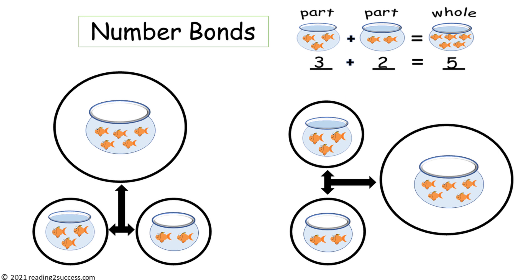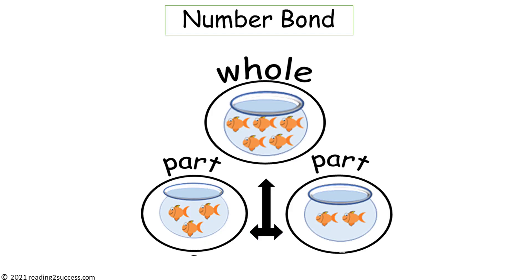Just as with addition equations, many teachers use number bonds to teach addition. It is part plus part equals whole. In a number bond, there are usually two smaller circles that represent the parts and one large circle that represents the whole. They can be arranged differently, with the largest circle at the top or to the right, sometimes the left. In teaching with number bonds, I have found the arrangement with the largest circle at the top to be the easiest for kids to understand, so I have chosen that one to use in this video.